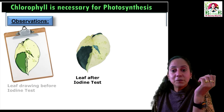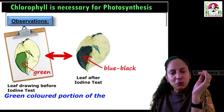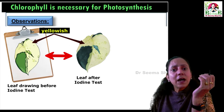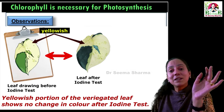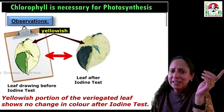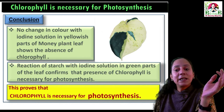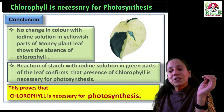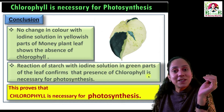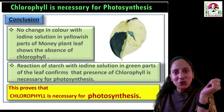For observation, compare the blue-black stain with the drawing or picture you had taken earlier. The green colored portion of the variegated leaf has turned blue-black in color, confirming the presence of starch. The yellowish non-green portion shows no color change because it lacks chlorophyll. From these observations we can conclude: no color change in the yellow parts shows absence of chlorophyll, and the starch reaction in the green parts confirms that the presence of chlorophyll is necessary for photosynthesis.